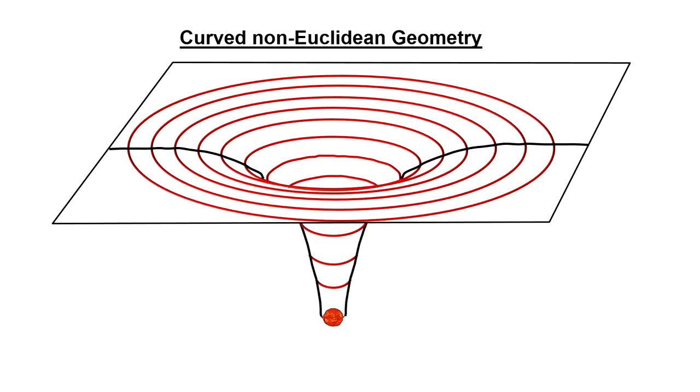But diagrams like this are misleading in two ways. First, they represent an external curvature into another dimension, when in fact we are talking about intrinsic curvature. There is no evidence for the existence of a fourth spatial dimension.